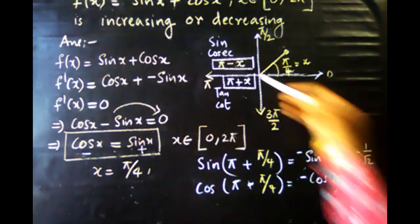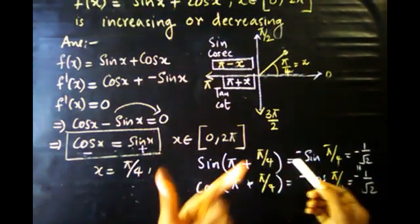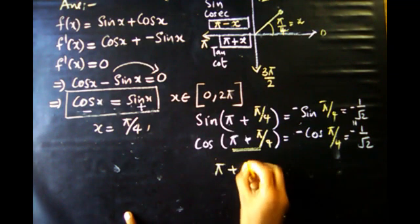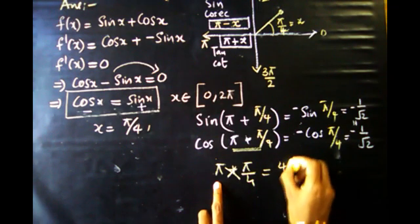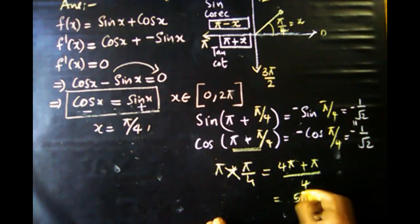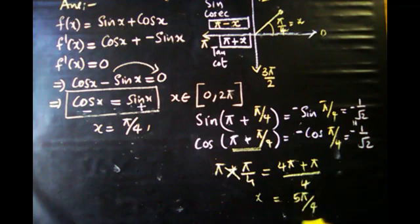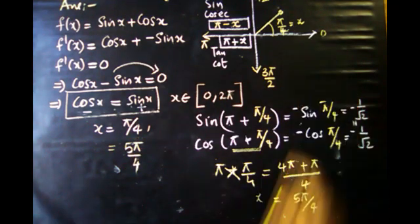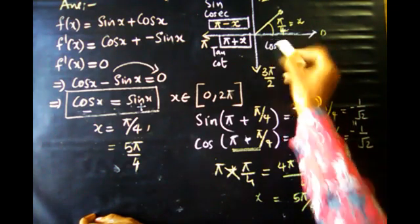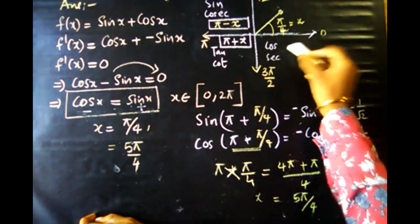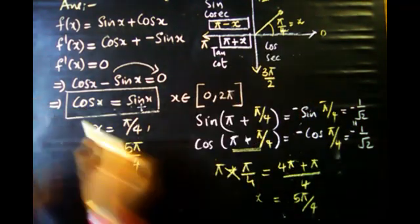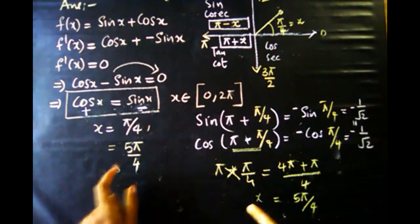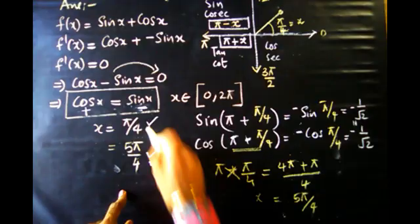In the third quadrant, both sin and cos are negative, so they can be equal. In the fourth quadrant, cos is positive and sin is negative, so cos and sin cannot be equal. Therefore the critical point from the third quadrant gives x equal to pi plus pi by 4, which is 5 pi by 4.